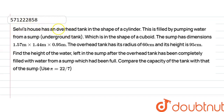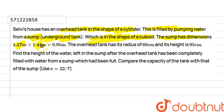Hello guys. The question is: Selvi's house has an overhead tank in the shape of a cylinder. This is filled by pumping water from an underground tank. The overhead tank is a cylinder and the underground tank is a cuboid with dimensions 1.57 m, 1.44 m, and 0.95 m. The overhead tank has a radius of 60 cm and a height of 95 cm. Find the height of the water left in the sump after the overhead tank has been completely filled.